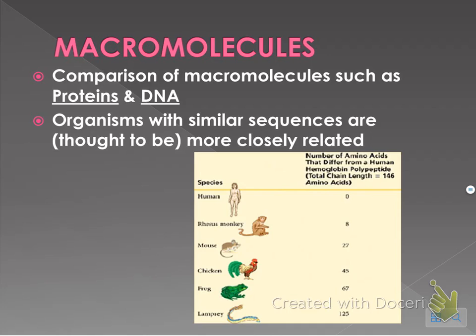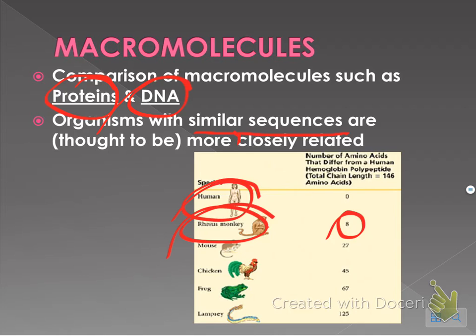The last method is macromolecules. We have proteins, DNA, lipids, and carbs as our four macromolecules. When we compare proteins and DNA, organisms with similar sequences are thought to be more closely related. For example, humans differ from monkeys by only 8 amino acids, but humans differ from a lamprey by 125 amino acid differences, meaning humans and lampreys are not very closely related. And that's it.